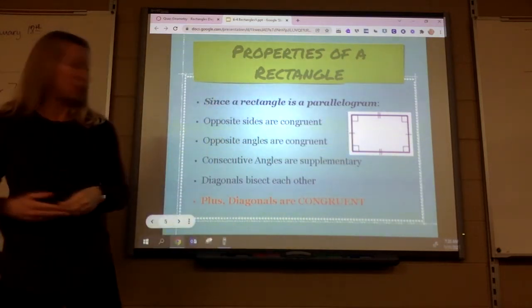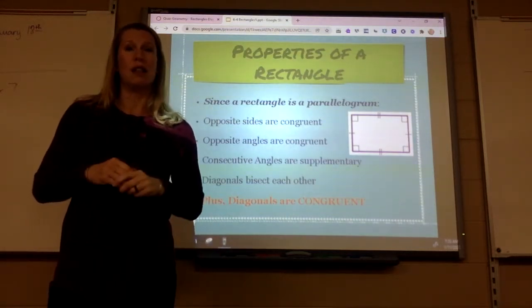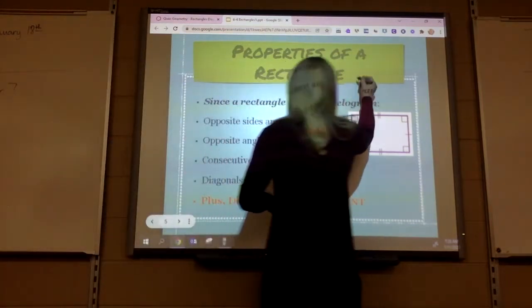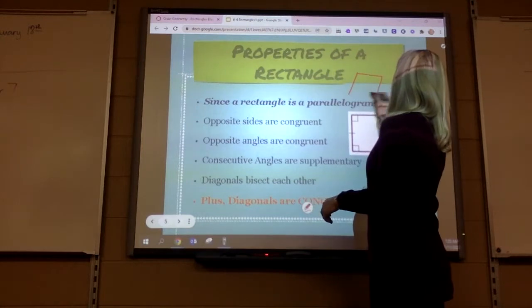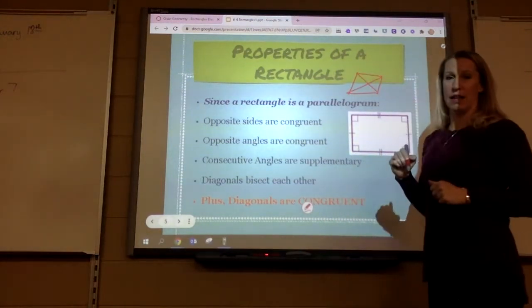Diagonals bisect each other. But there's one more property of a rectangle. The diagonals are congruent. So on a regular parallelogram, they don't have to be congruent. Do you see how that diagonal would be longer than that diagonal?